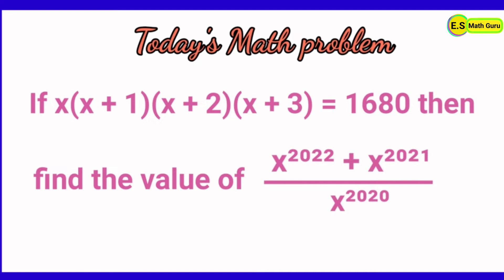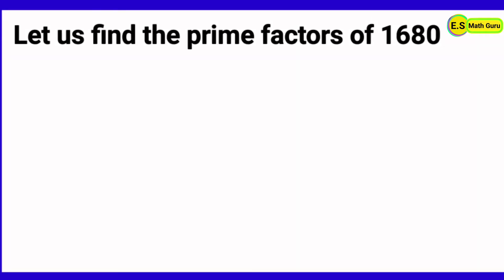Now let us learn how to solve it. Here x, x+1, x+2, and x+3 are four consecutive natural numbers, and it is given that the product of these four consecutive natural numbers is equal to 1680. So we can find the value of x by expressing 1680 as the product of four consecutive natural numbers using the prime factorization method. Let us find the prime factors of 1680.